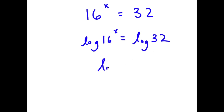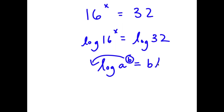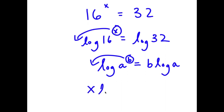If I have something in the form log a to the power of b, I can move my exponent of b to the front. So this is equal to b times log a. So for log 16 to the power of x, I can move x to the front. So now I have x times log 16, which is equal to log 32.